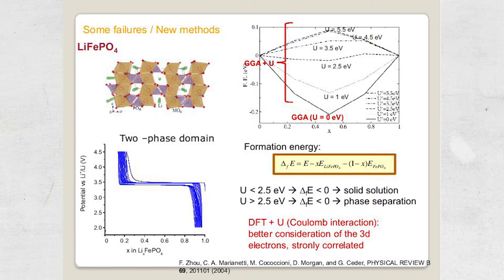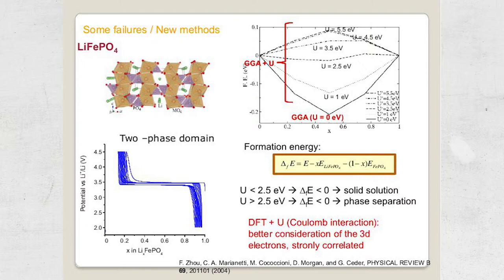In order to have good agreement between the calculated phase diagram and the experimental one, one has to use GGA+U to better treat strongly correlated electrons. This gives a different shape for the formation energy curve versus lithium content depending on the U value. For U equal to 1 eV we still predict solid solution behavior, and it's only for U values above 3 eV that we start to predict positive formation energies between FePO4 and LiFePO4, which agrees with the experimental two-phase domain. This is a case where GGA alone was not good enough and we had to switch to DFT+U.